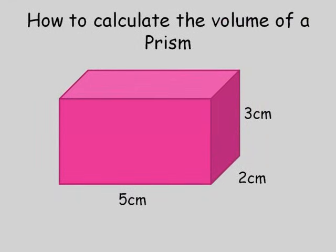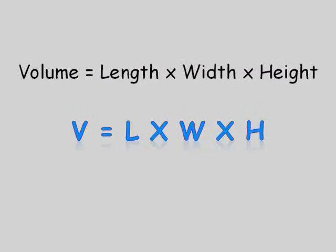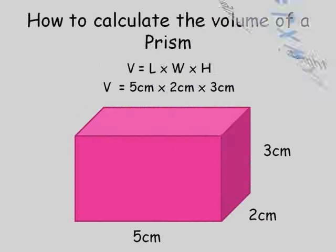This rectangular prism has a length of 5 centimetres, a width of 2 centimetres, and a height of 3 centimetres. So, our prism has a length of 5 centimetres, a width of 2 centimetres, and a height of 3 centimetres. To work out our volume, we need to times 5 times 2 times 3.